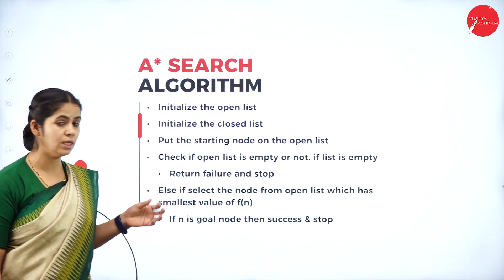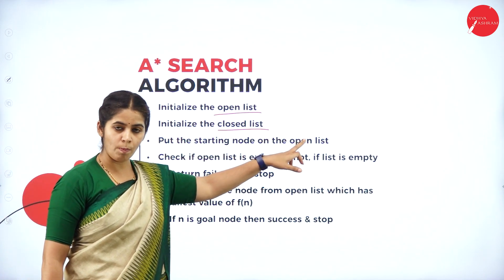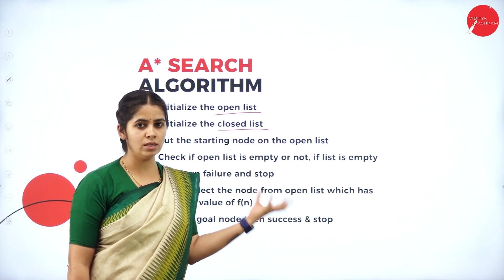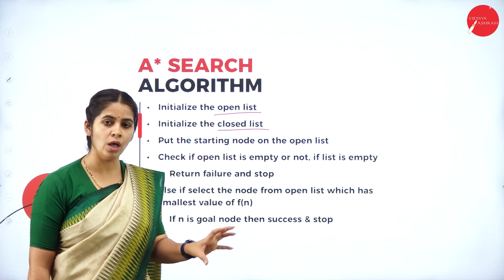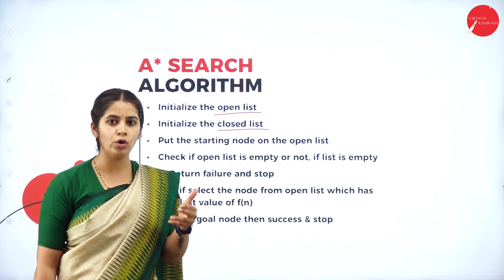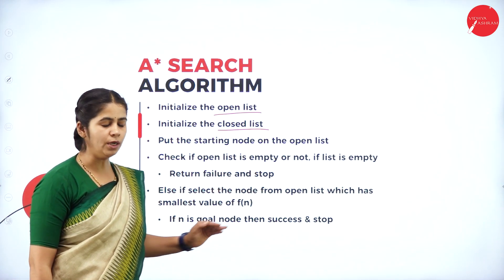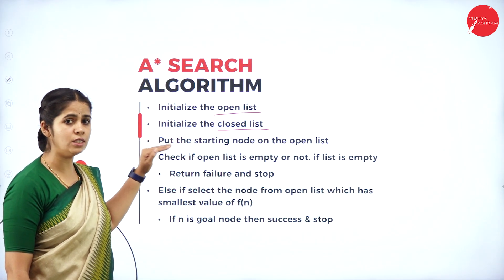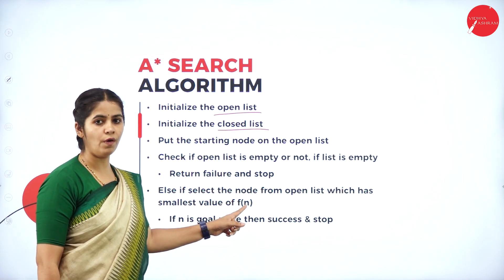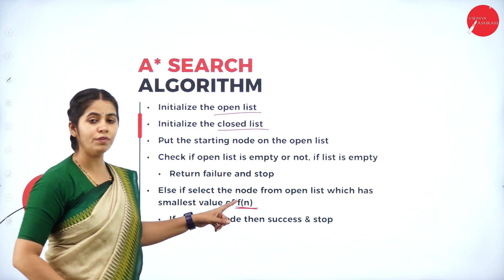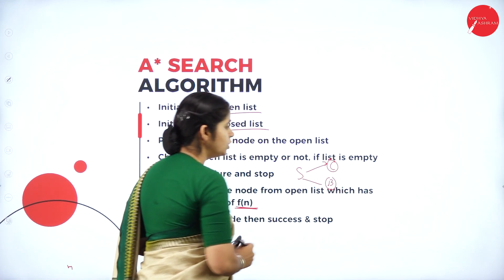Let's see the algorithm. First, initialize two lists: an open list and a closed list. Put the starting node onto the open list because our searching starts from the starting state. Then check if the open list is empty or not — whether there is a successor for that particular node. If there is no successor and it is empty, then return failure and stop the execution. If it is not empty, then select the node from the open list which has the smallest value of f(n).